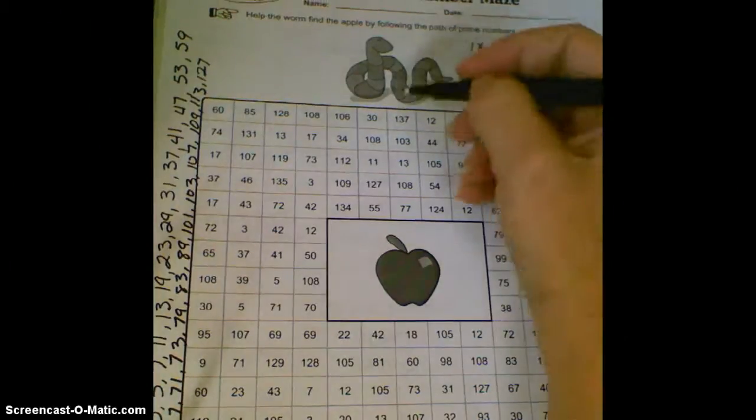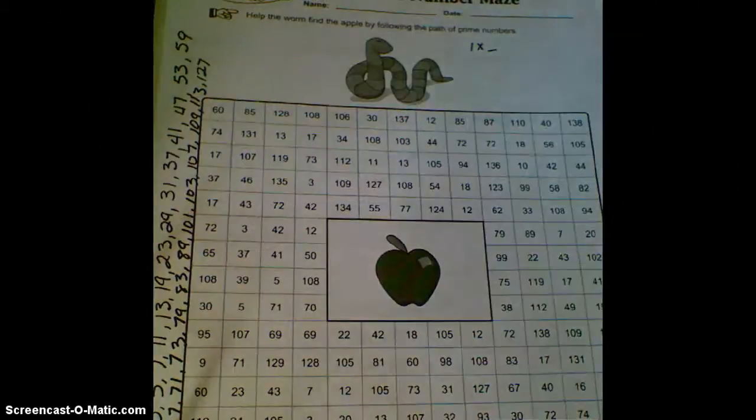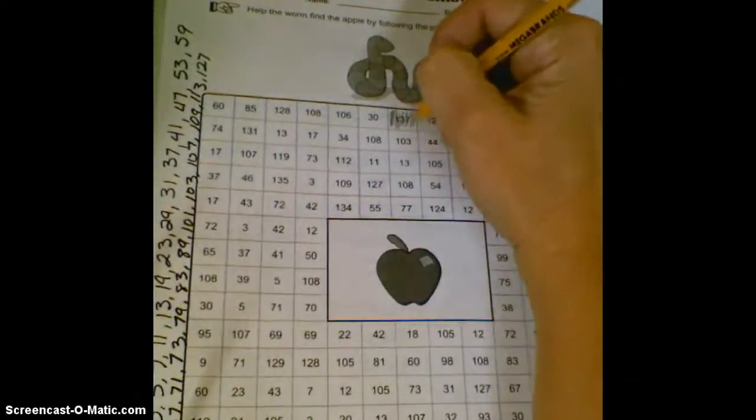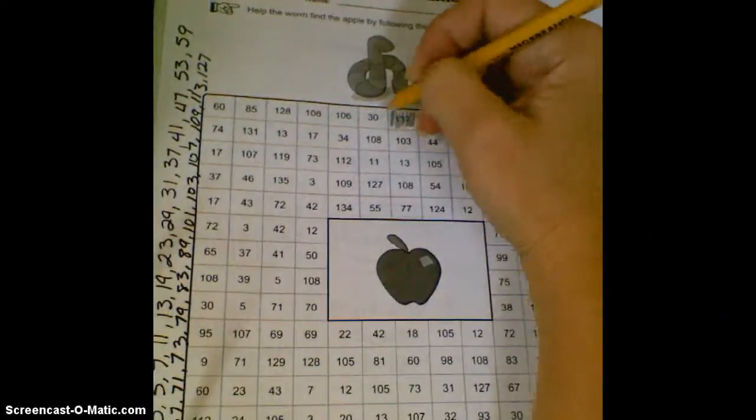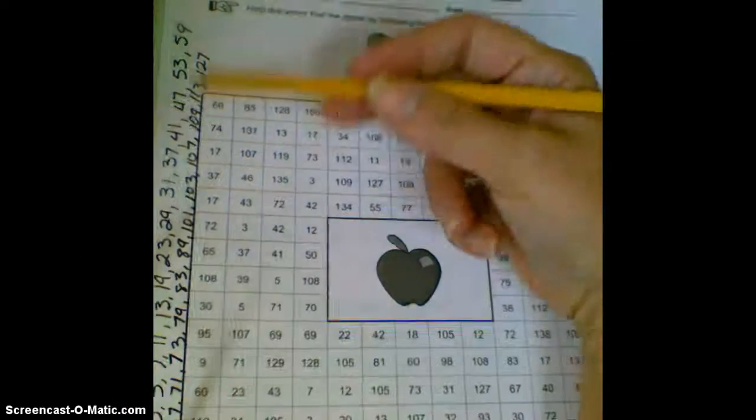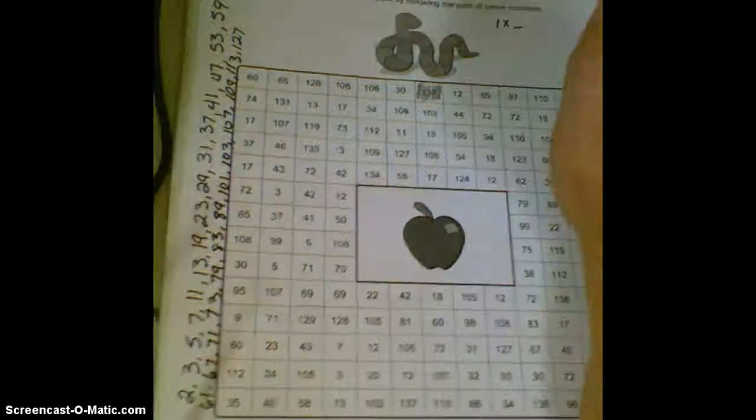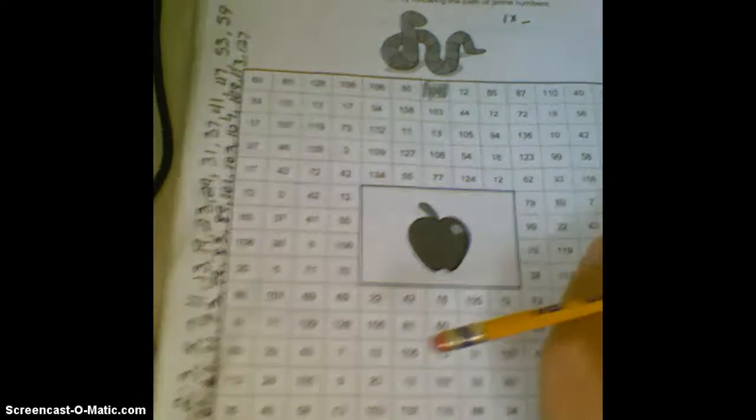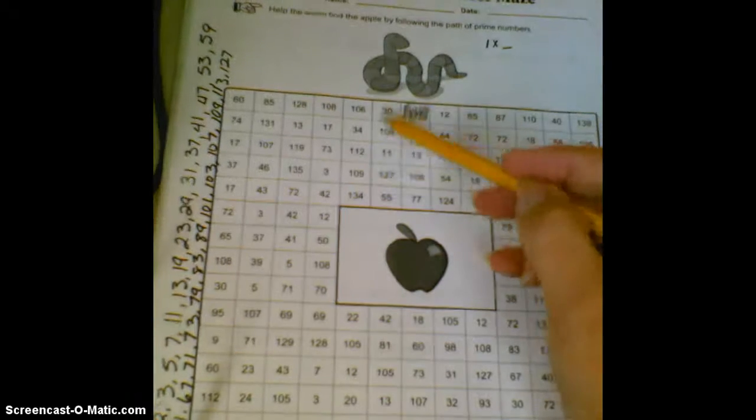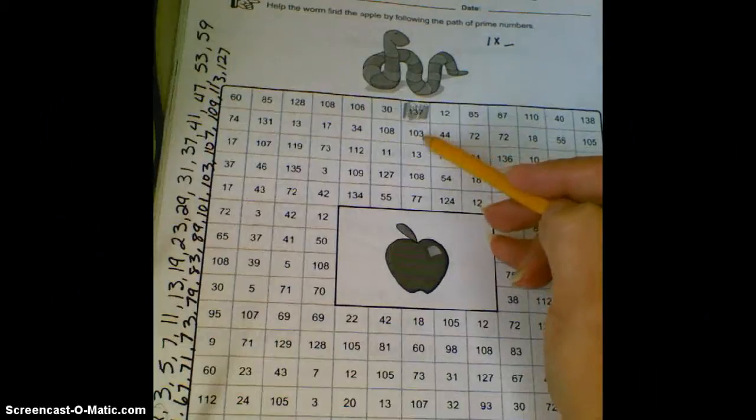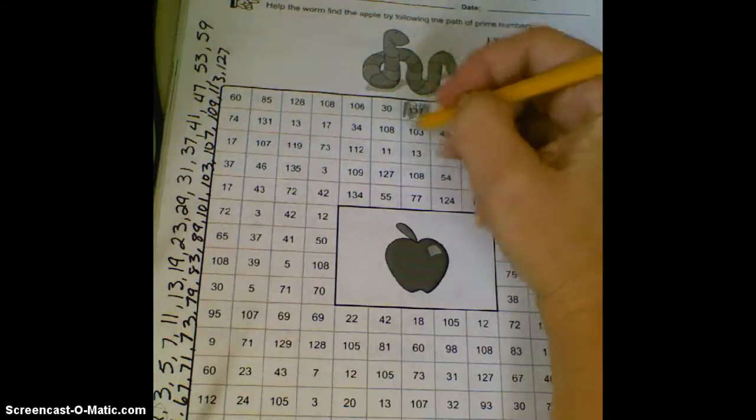Looking for a number off of our list that's prime, and I think 137 will do it. I'm going to switch to a pencil so I can erase if I need to. Okay, and now I'm going to start looking. 30 is not prime. If you notice our list, almost all prime numbers are odd. The one exception is 2. 103, is it on our list? Is that a prime? Sure it is.